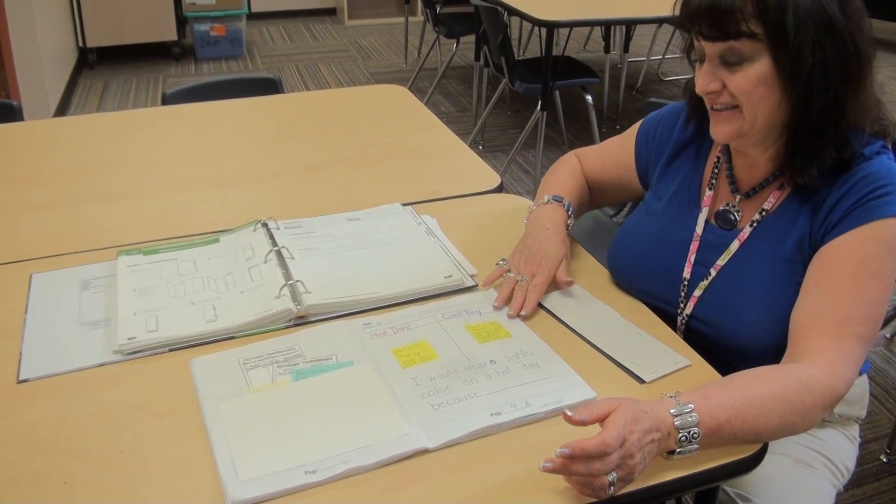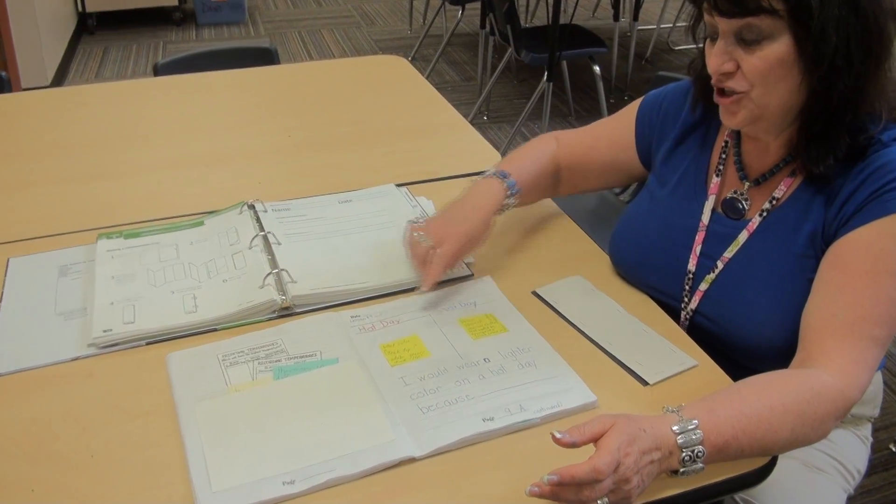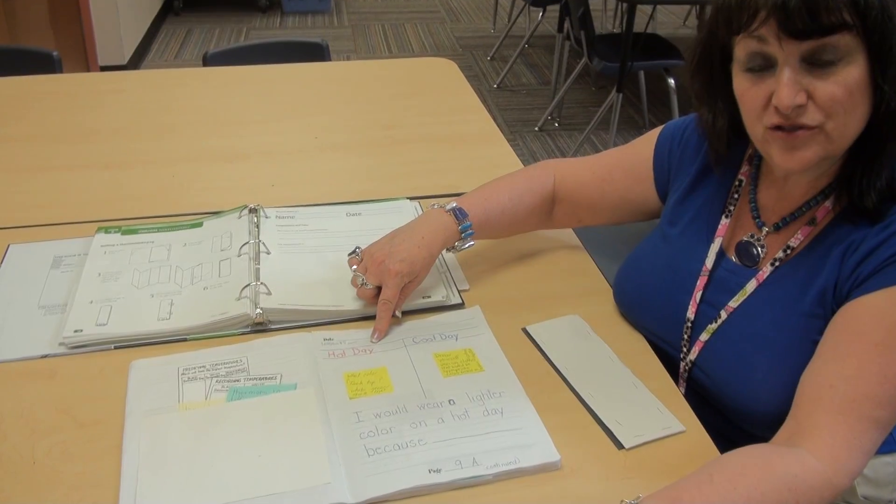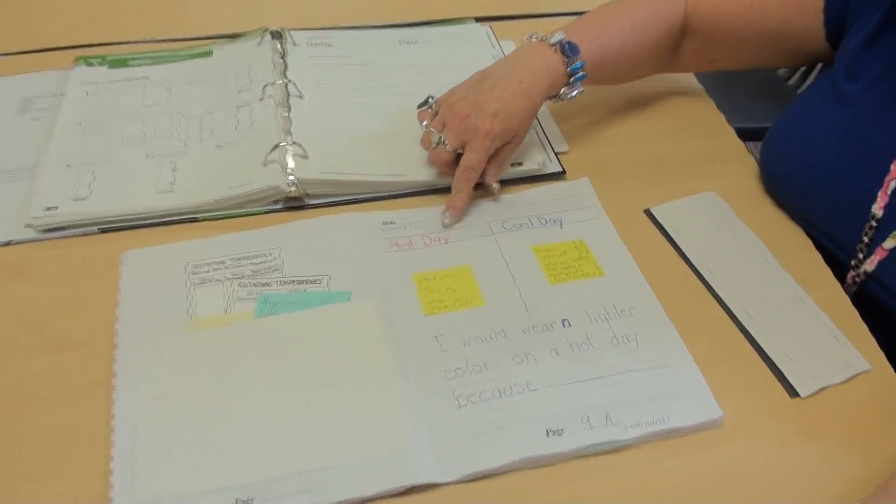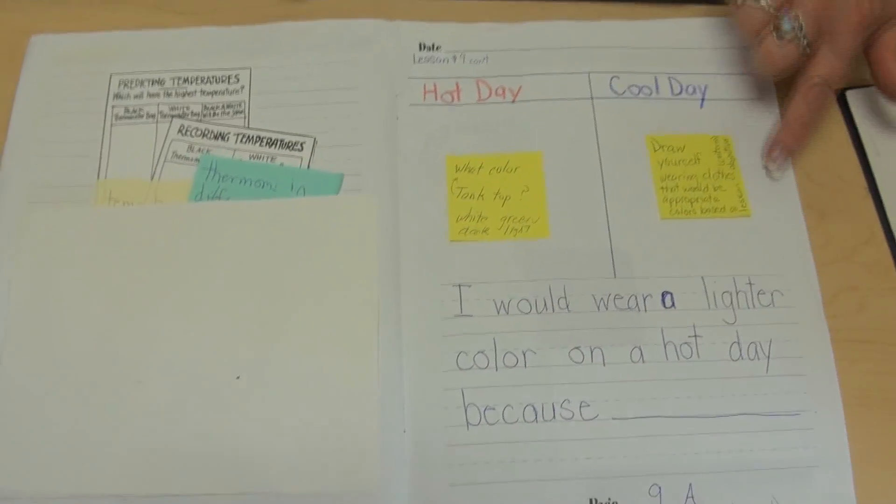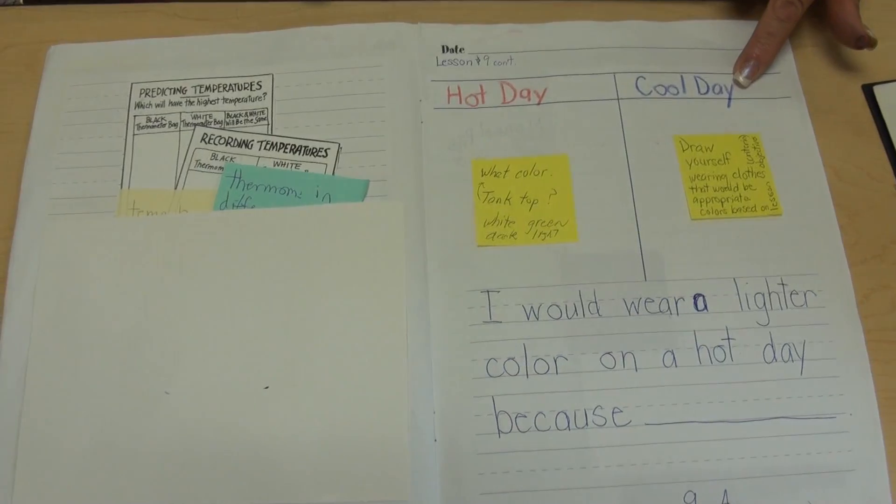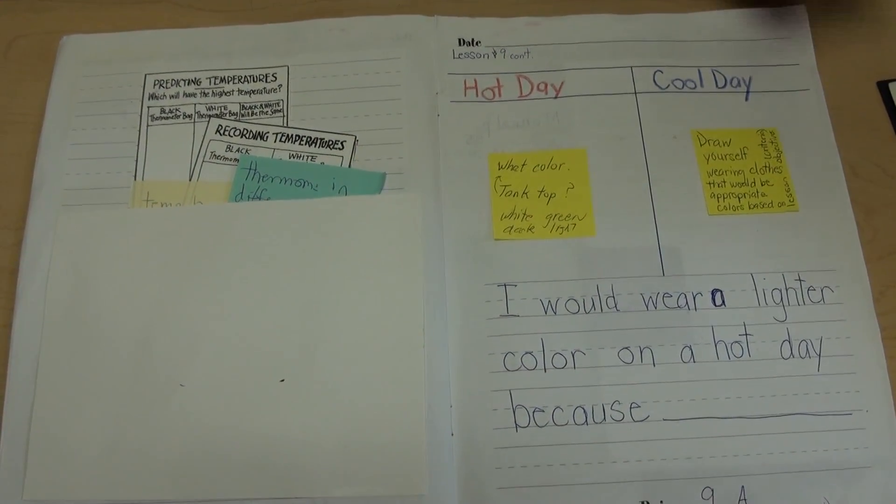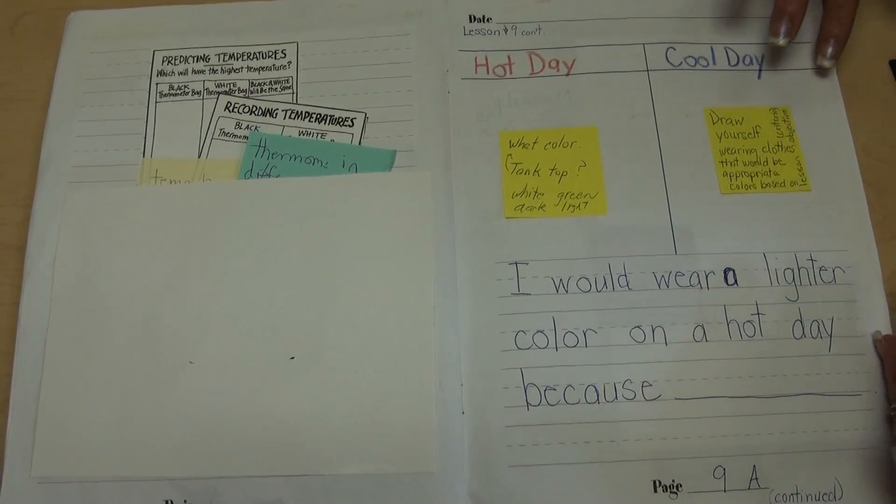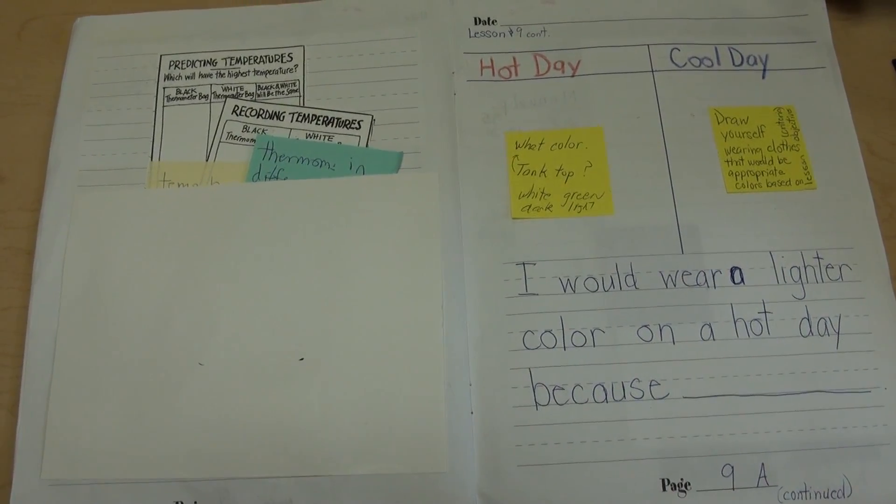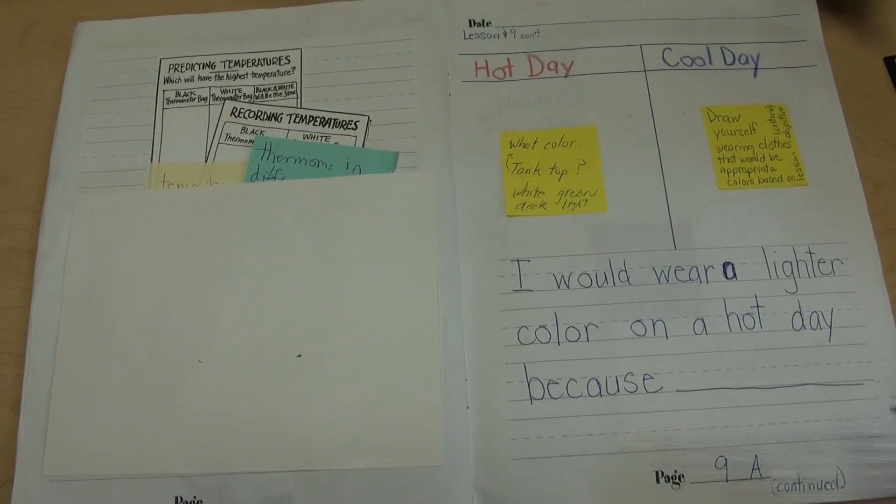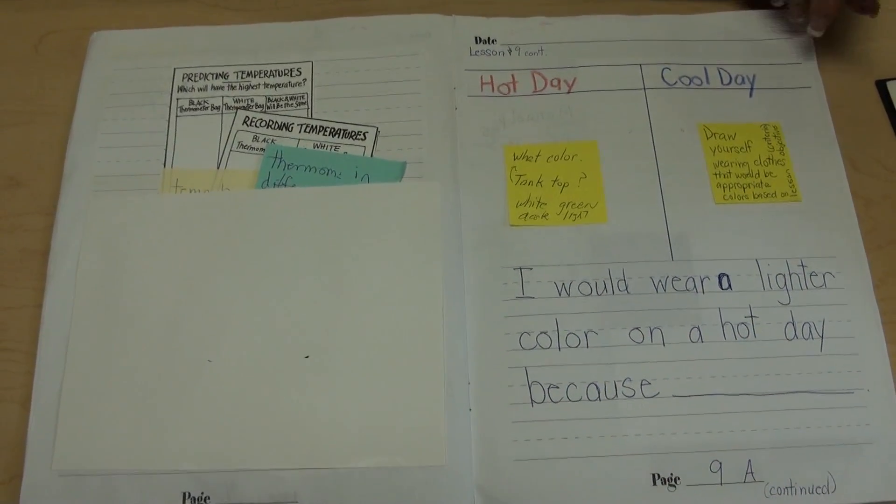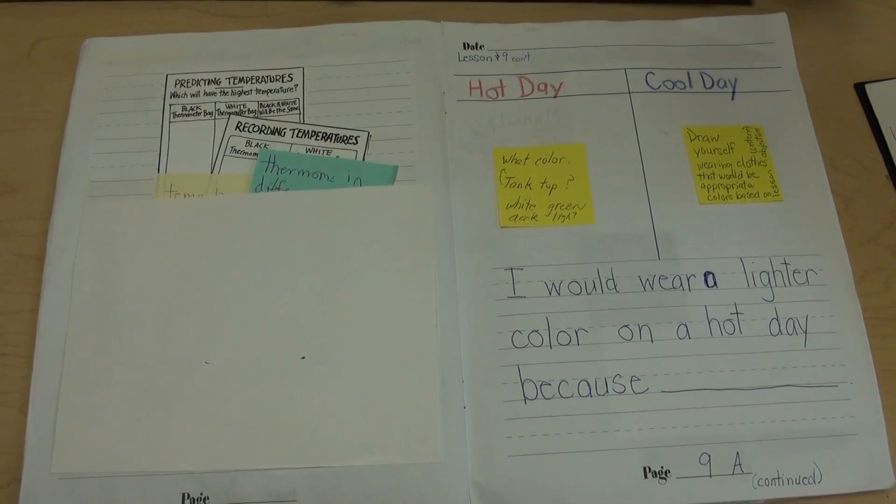And as an extension to this lesson, the children can, in a T-chart, draw a picture of themselves wearing clothes on a hot day and a picture of themselves wearing clothes on a cool day. So they would have something to compare, and talking about what they're wearing for hot days and what they're wearing for cold days. A sentence starter for them might be, I would wear a lighter color on a hot day, because. I would wear a cooler color on a warm day, because.